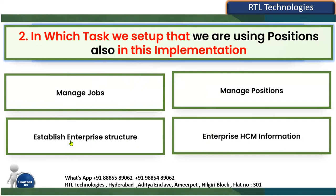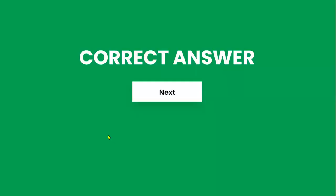I'm going to select 'Establish Enterprise Structure' because in this task there is a button to configure the job and position structure. Once you open this task, there are two buttons at the top: one is 'Manage Job and Position Structure' and the other is 'Roll Back the Enterprise Structure Configuration.' Under jobs and position structures, the system asks whether you want to go ahead with only jobs or jobs with positions. Please go back to that task and click the 'Jobs and Position Structure' button and check the radio buttons to find the options.